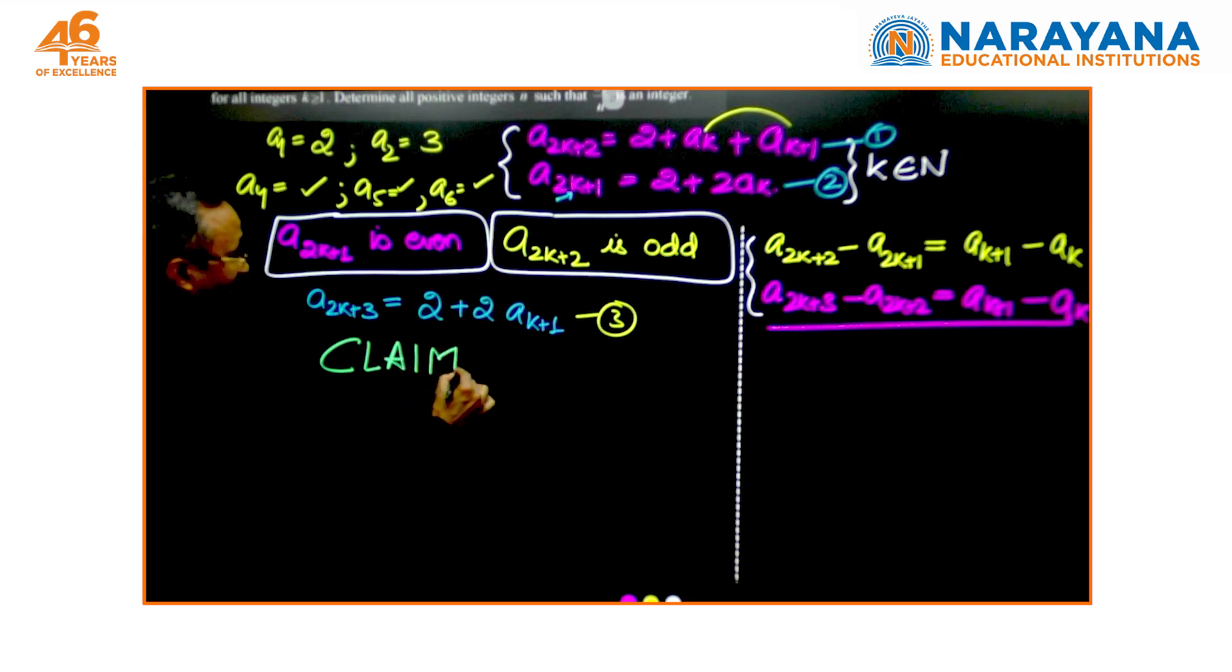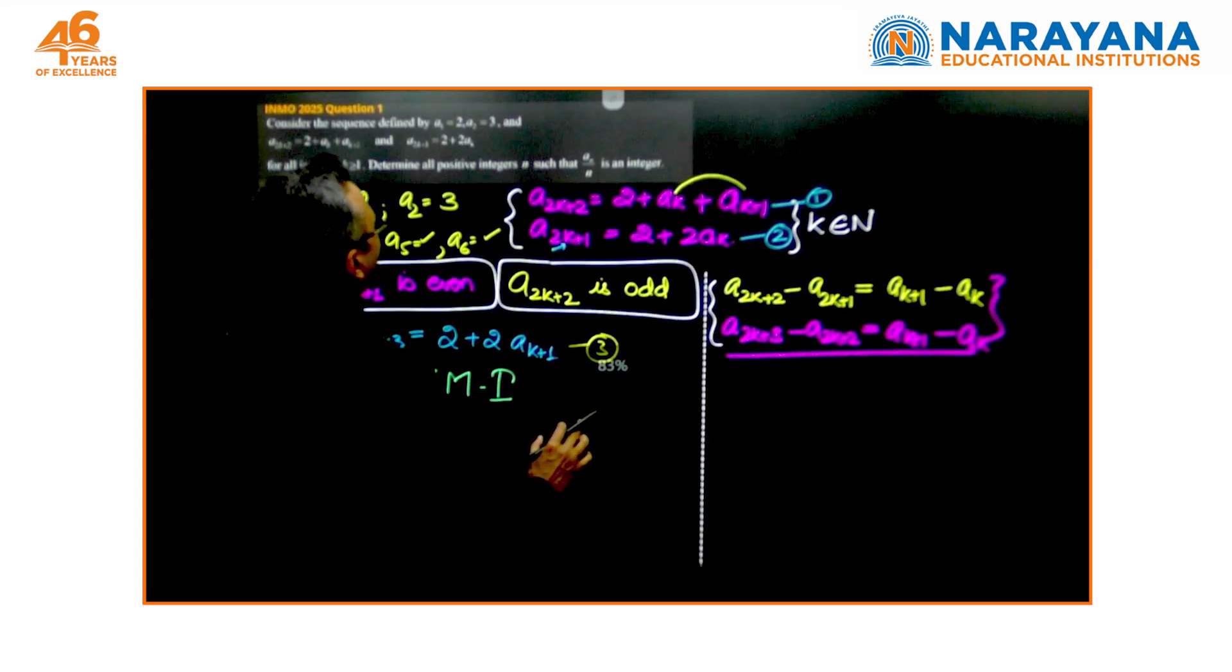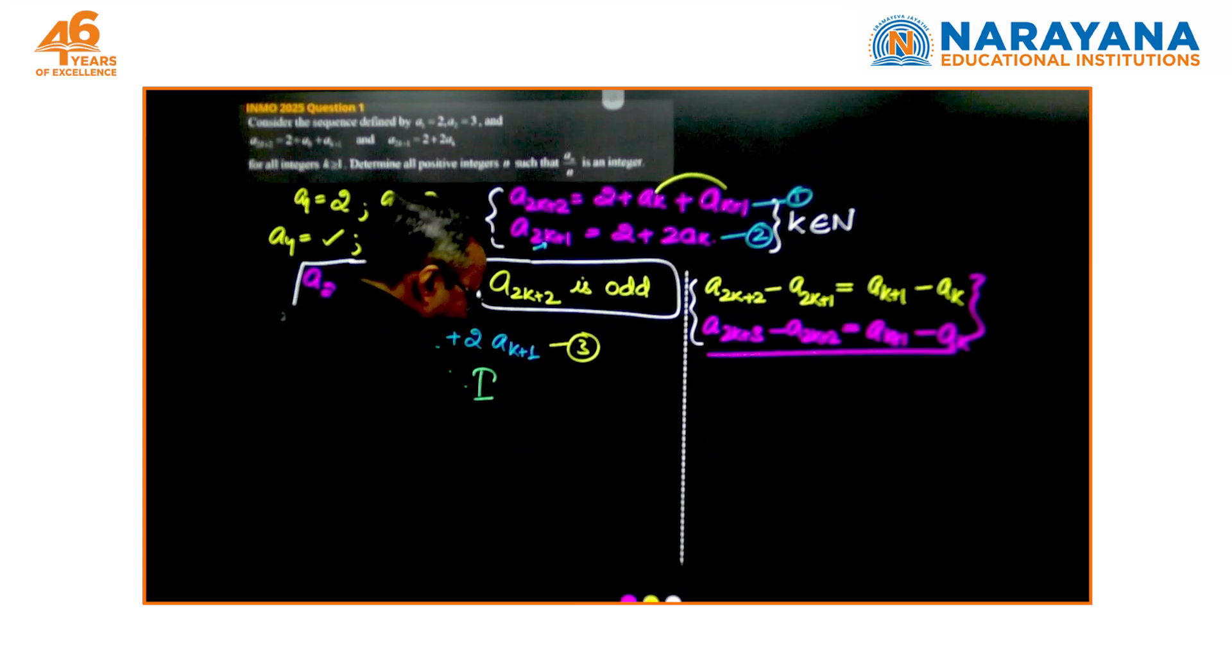The idea is, why should I claim something? The claim 1 here says, it is pretty simple that after writing few terms because you are asking for an integer, we realize when do we get that integer.